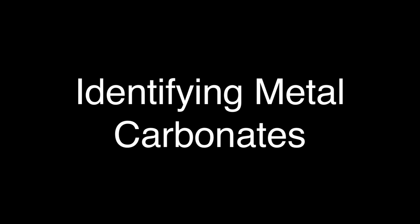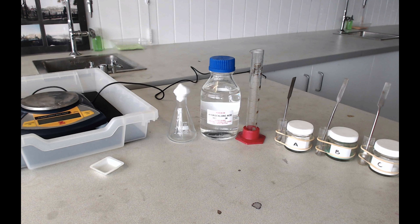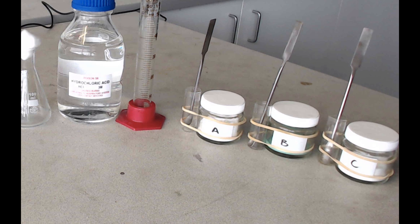Hello and welcome to this film which is all about the practical called identifying metal carbonates. We're going to need some metal carbonates in this experiment, and they are kept in three marked jars, but the jars are only marked with the letters A, B, and C so that you don't know what metal carbonate is in each one.